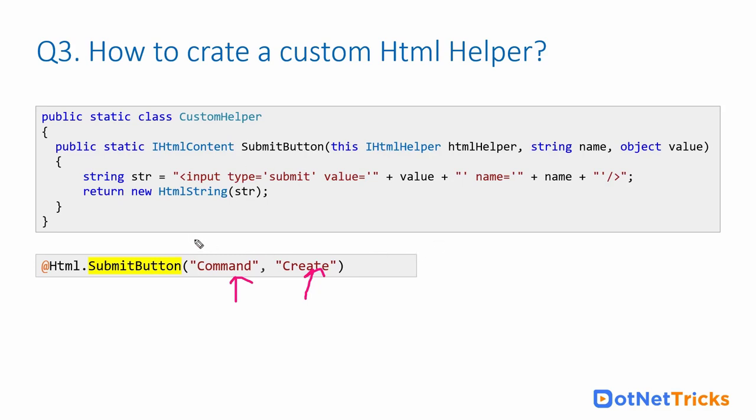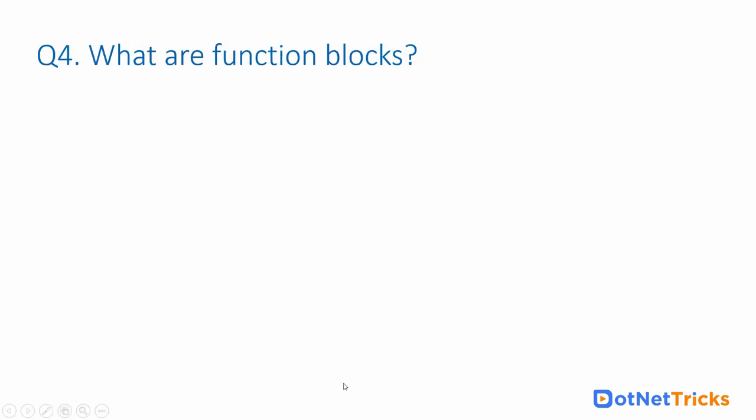You can then access the custom helper just like any built-in HTML helper using @Html.SubmitButton, passing parameters such as the name and value. For example, passing 'create' as the value. This makes it a reusable helper that can be used in multiple places wherever you need to create a submit button.